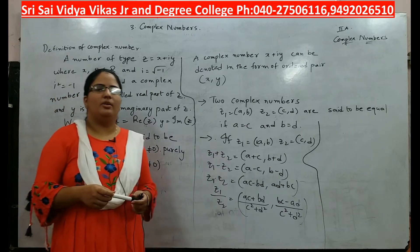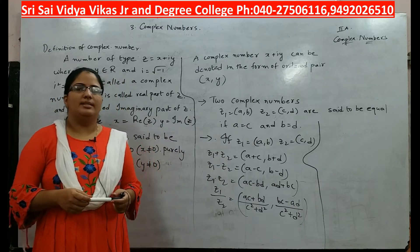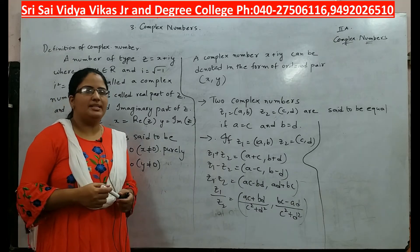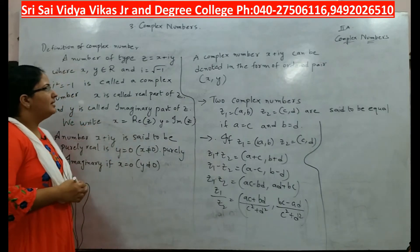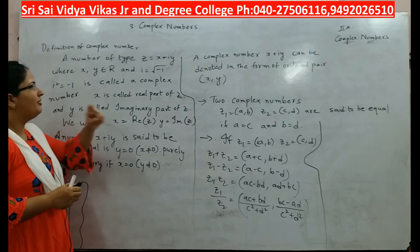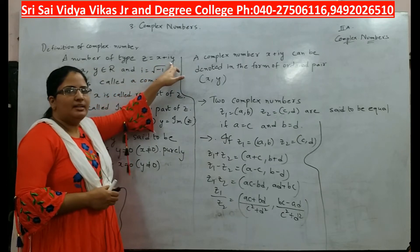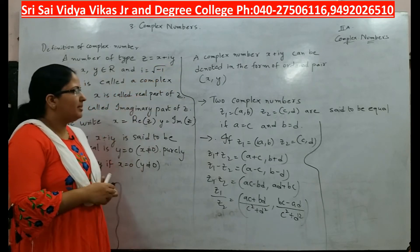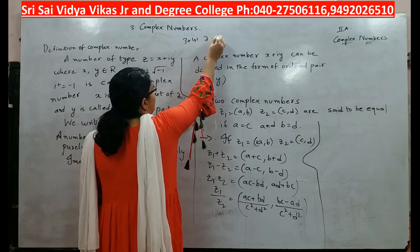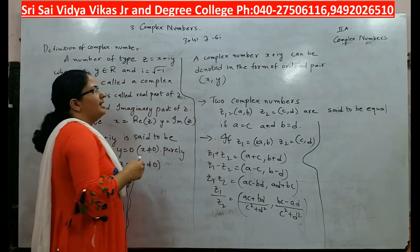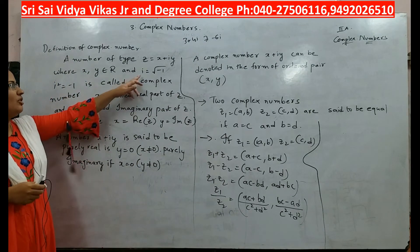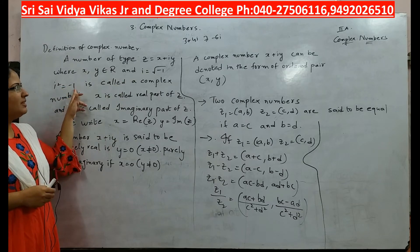Hello students, hope you are all going good. In today's class we shall start a new chapter: complex numbers. What is a complex number? If you are able to write any number in the form of x plus iy, then it is called a complex number. For example, 3 plus 4i, 7 minus 6i — all these are examples of complex numbers, where i is the square root of minus 1 and i squared is equal to minus 1.